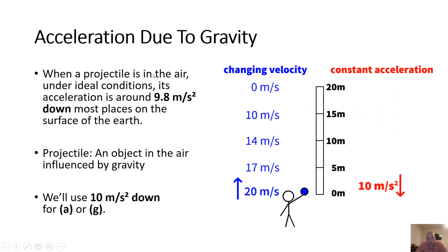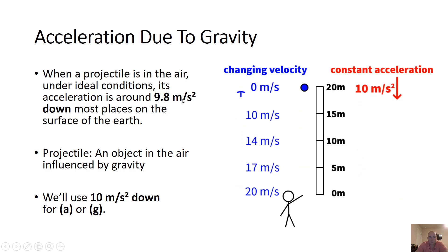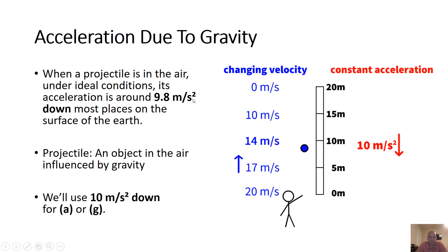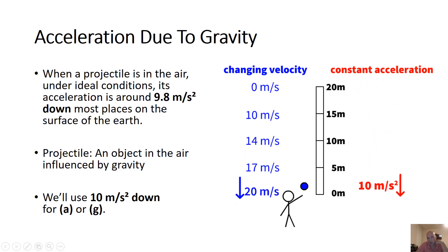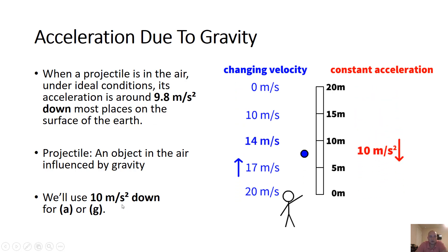Acceleration due to gravity at most places on Earth is 9.8 meters per second squared downward. Every second, an object in the air will travel faster to the ground by 9.8 meters per second — that's where the 'per second squared' comes from. We're going to round that to 10 meters per second squared because that number changes with elevation. The higher the elevation, the less gravity you have, so we round to a good, easy-to-conceptualize number.